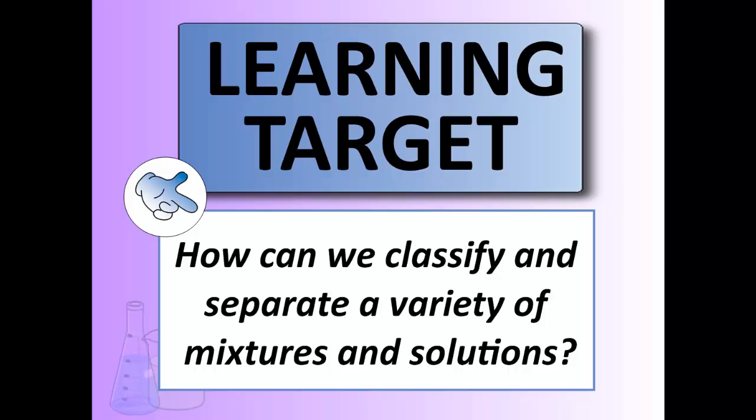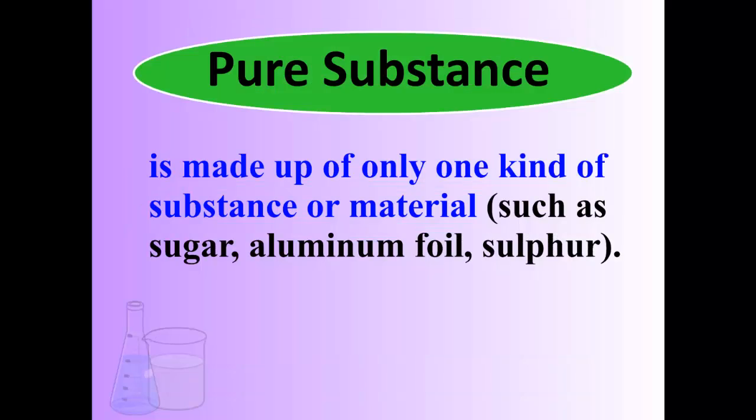When we have something, it's going to be classified into one of two things. It's going to be either a pure substance — a pure substance is made up of only one kind of substance or material, like sugar, aluminum foil, sulfur, or water. It can't really be broken down into anything else. That's how it exists.